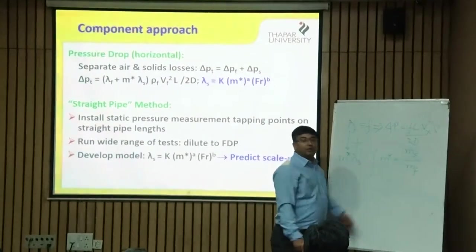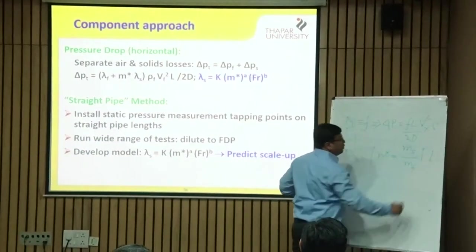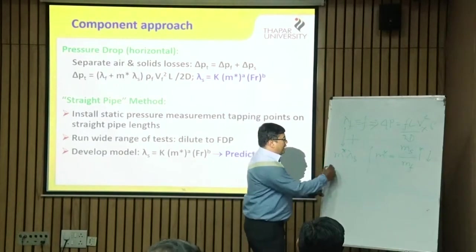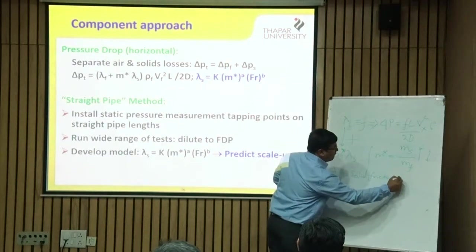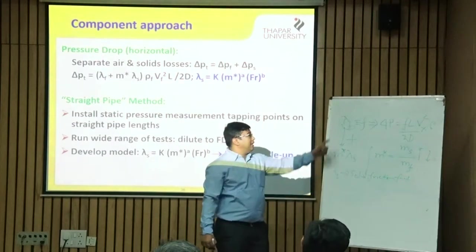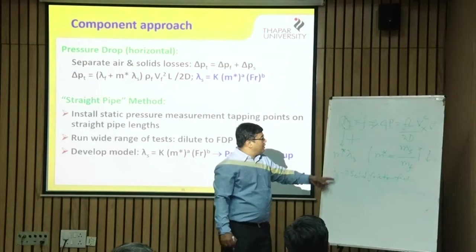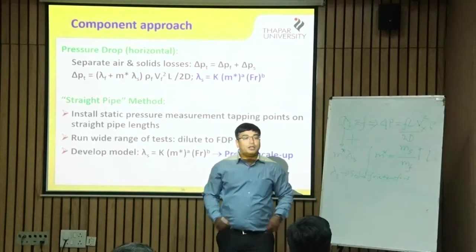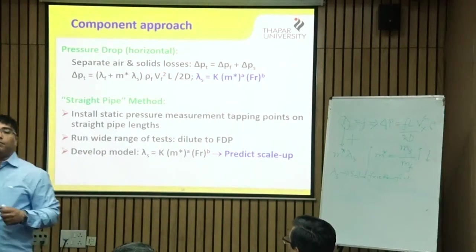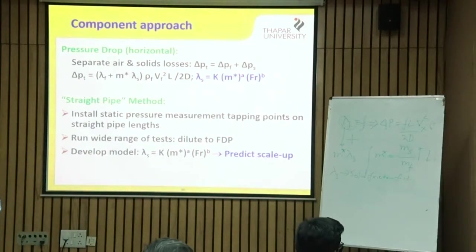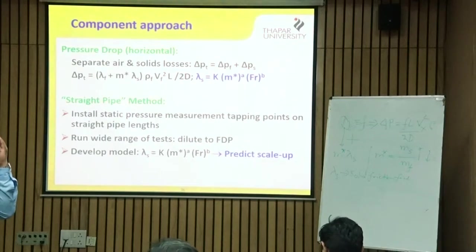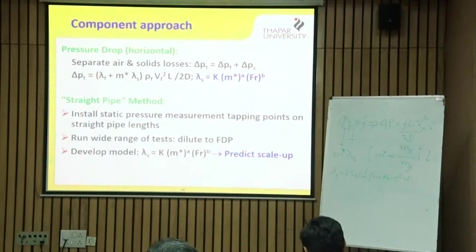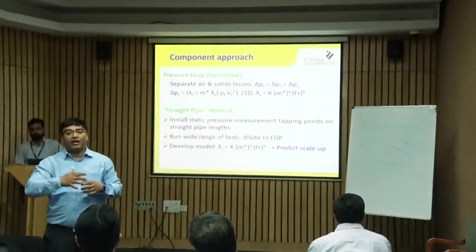If it is a dense phase system, m* will be high; if it is a dilute phase system, m* will be low. λs is the solid friction factor — analogous to the fluid friction factor λf. Solid friction arises from particle-to-particle impact or friction, particle-to-wall friction, and the drag created by air flowing over the particles. Air velocity is always higher than particle velocity, and that relative velocity creates the drag that moves the particles.